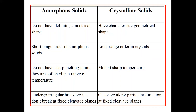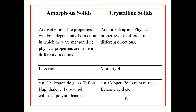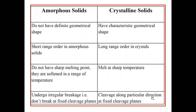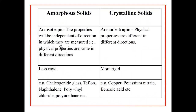Amorphous solids undergo irregular breakage, i.e., they do not break at fixed cleavage planes, whereas crystalline solids cleave along particular directions at fixed cleavage planes. Amorphous solids are isotropic — meaning their physical properties are the same in all directions — whereas crystalline solids are anisotropic, meaning physical properties differ in different directions. Amorphous solids are less rigid, whereas crystalline solids are more rigid.